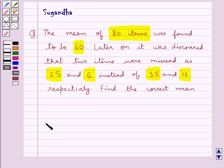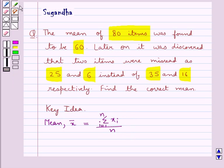Before moving on to the solution, let's recall what is mean. It is denoted by x̄ and equals summation xi (i = 1 to n) divided by n. That is, mean is found by adding all the values of the observations and dividing by the total number of observations. This is the key idea for this question.